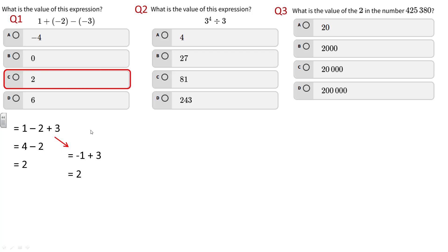Second one: what's the value of this expression? It's 3 to the 4th divided by 3 to the 1st. I'm going to show two ways to do this. When you're dividing you subtract exponents, so 4 minus 1 is 3. This is equal to 3 to the 3rd or 3 cubed. Three cubed means 3 times 3 times 3, which would be 27.